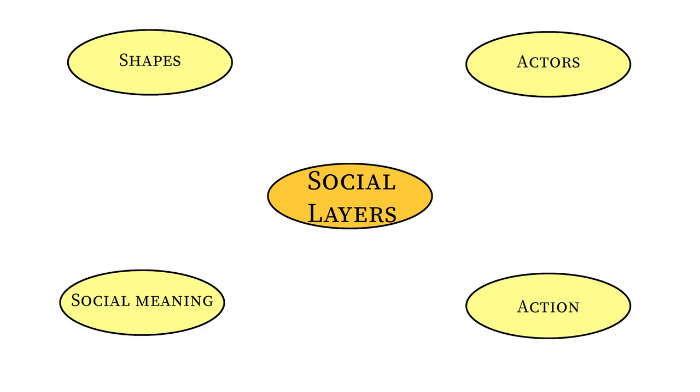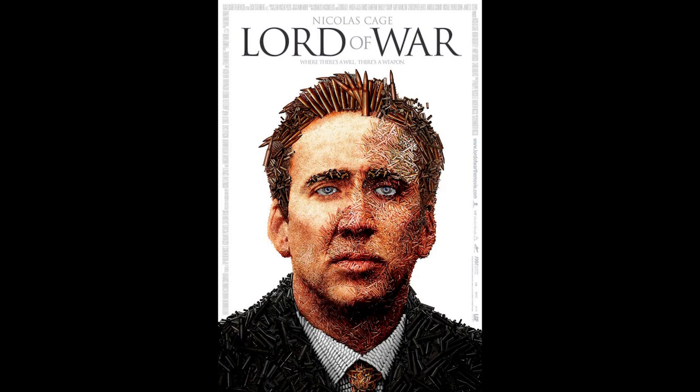Social layers are a little bit more complex. You could think of them as the symbolic features of an image, which will make more sense once I actually describe them and show some examples of it. But the first one is going to be dominant shapes. And I'll throw in social meanings for this too. So here we have a poster for the movie Lord of War starring Nicolas Cage. And if we're thinking about dominant shapes, we're thinking about what shapes are occurring in an image and what might that mean?